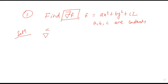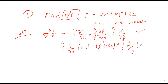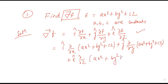The solution: ∇f is written as î(∂f/∂x) + ĵ(∂f/∂y) + k̂(∂f/∂z). We substitute the function f = ax² + by² + cz into each partial derivative. Since this is partial differentiation, for the x-component we differentiate ax², for the y-component we differentiate by², and for the z-component we differentiate cz.